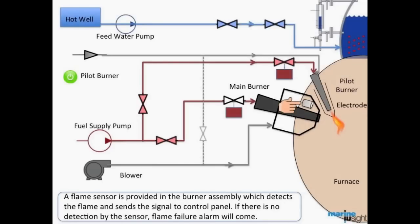A flame sensor is provided in the burner assembly which detects the flame and sends the signal to the control panel. If there is no detection of flame by the sensor, a flame failure alarm will be sounded.